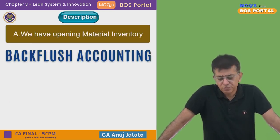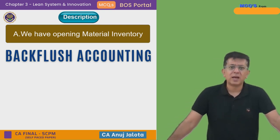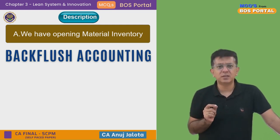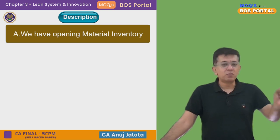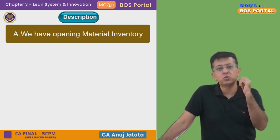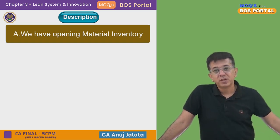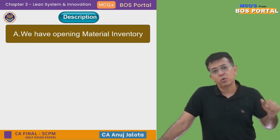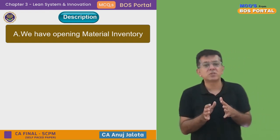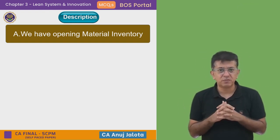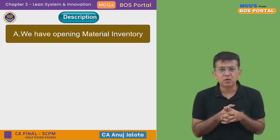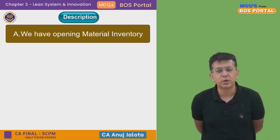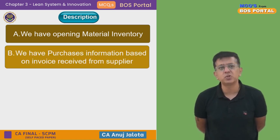Back flush accounting works like this. Usually, how do you find your closing stock? You have opening stock, you add purchases, less the consumption — that gives you the closing stock. But consumption is tricky to find out because it's happening in the factory and many times it used to go wrong. So a new system called back flush accounting was devised, whereby you spend very less time trying to figure out what the consumption was. The first two things are the same: you must know your opening stock, and then you look at invoices from the supplier — that gives you your purchases.